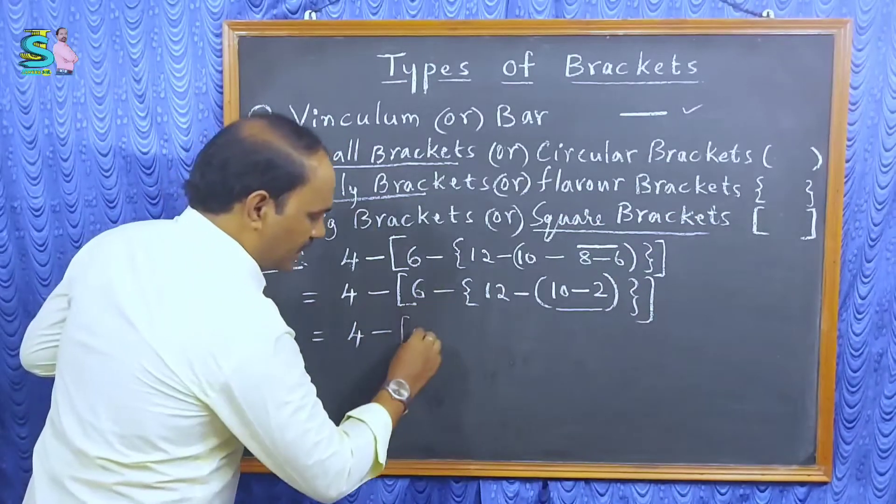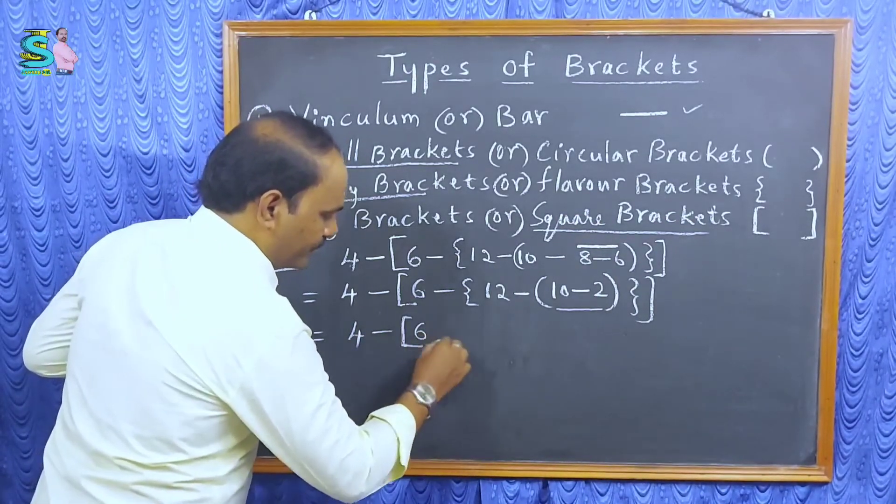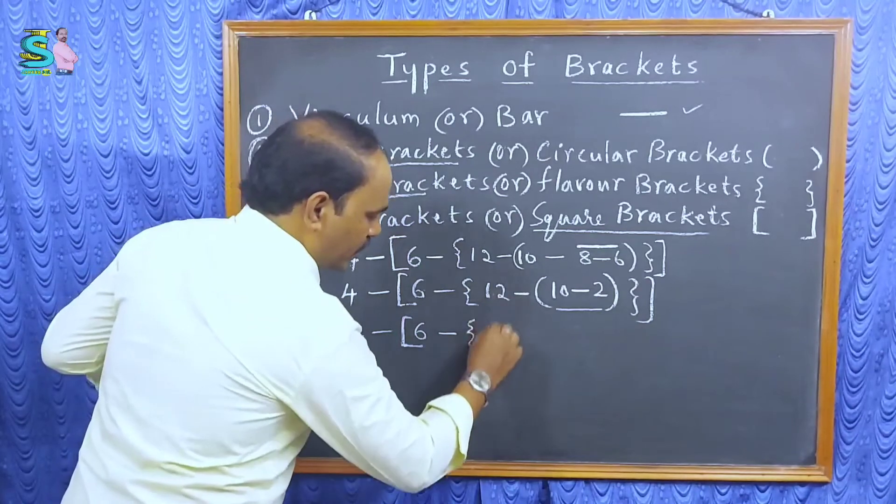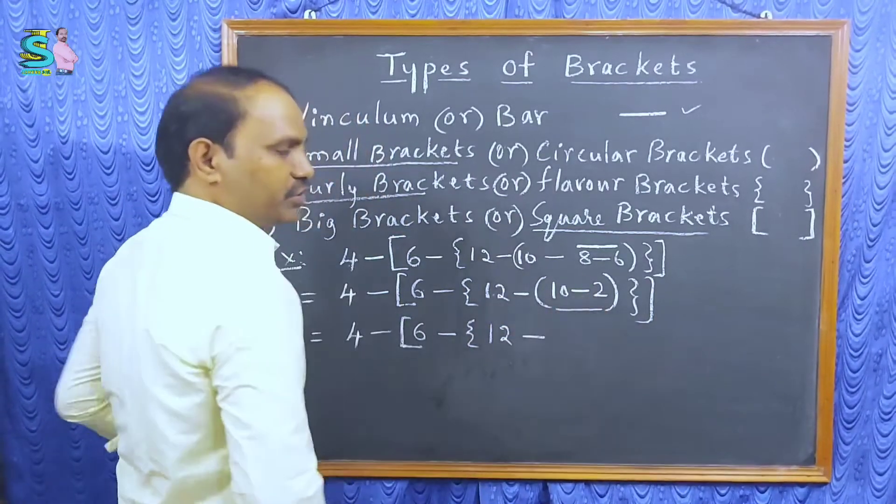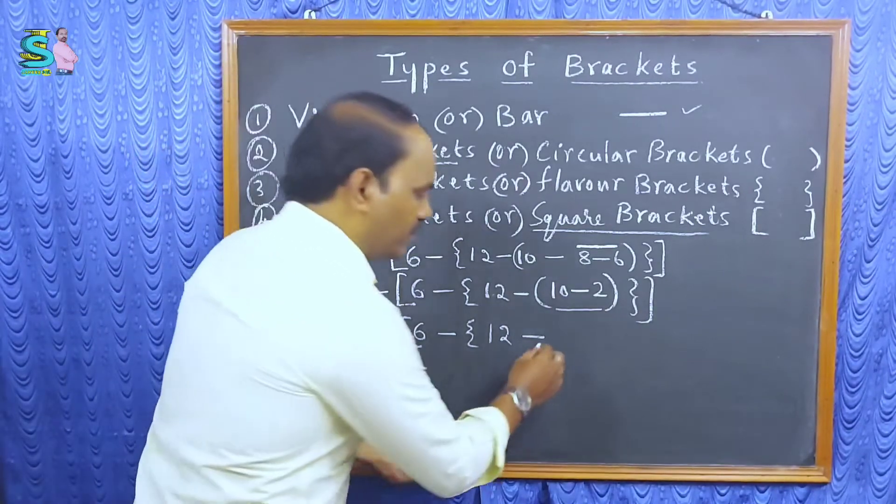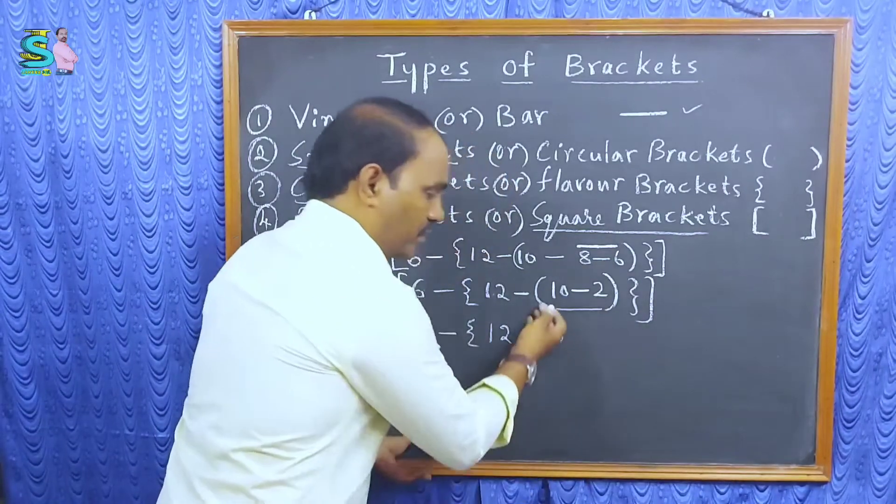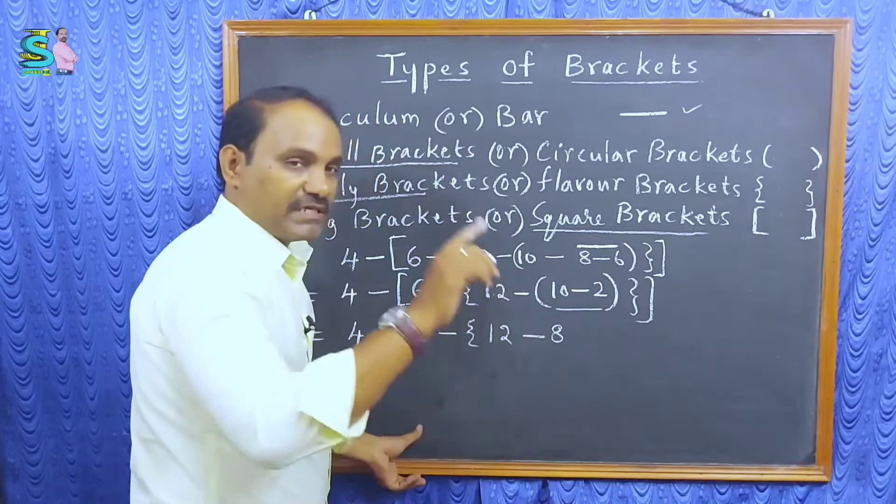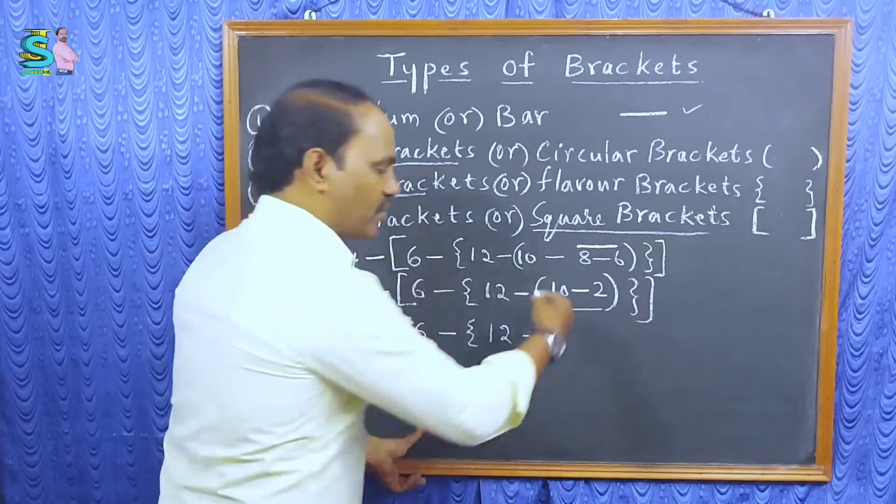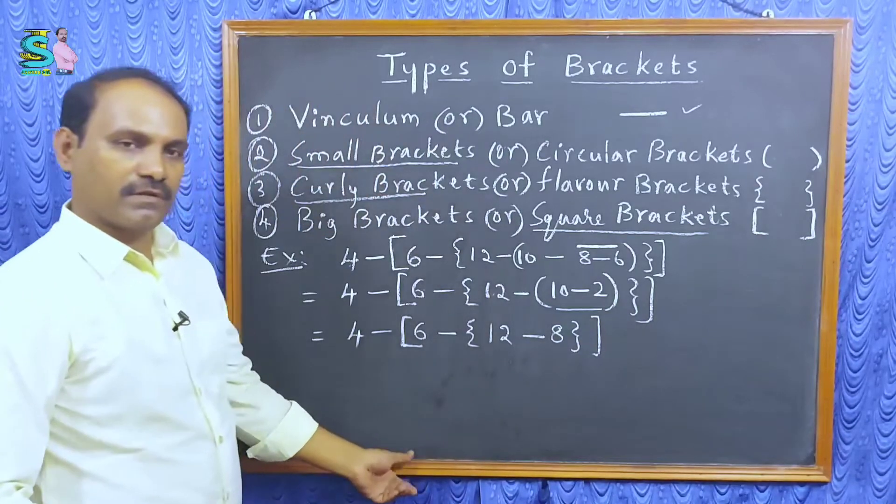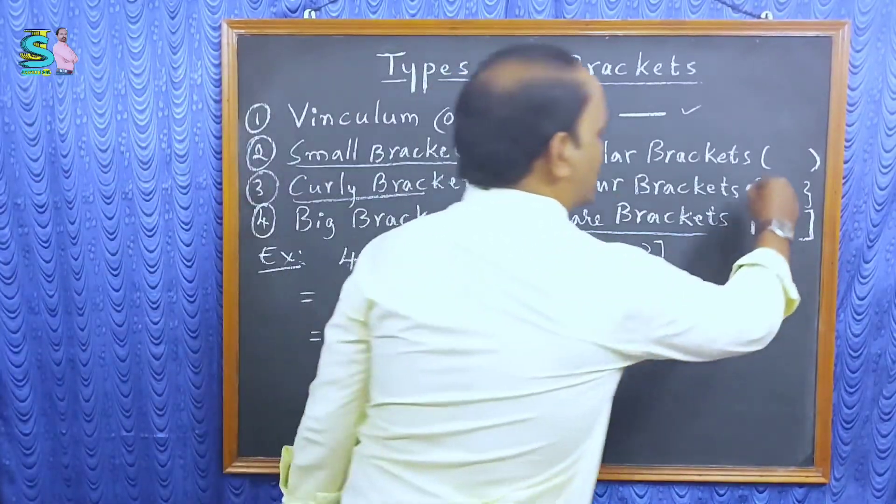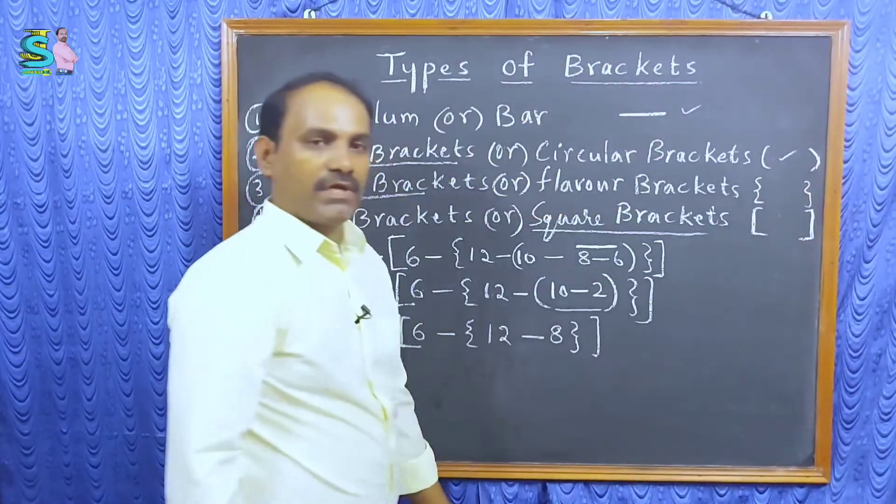Now, 4 minus, here 6 minus, 12 minus, 10 minus 2. 10 minus 2, 8. So, no need to write again, this small brackets. Remove those small brackets. After small brackets also, over.